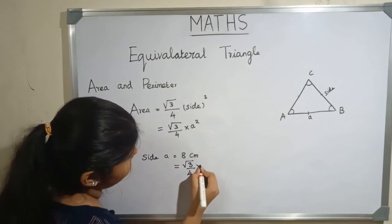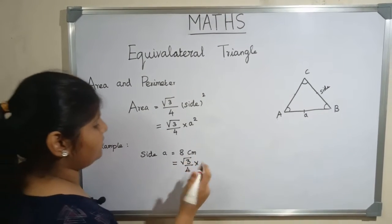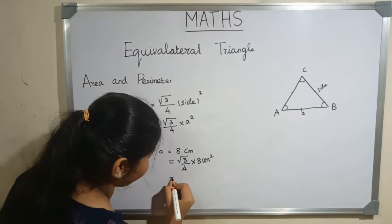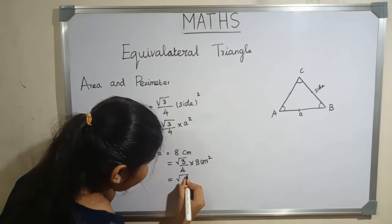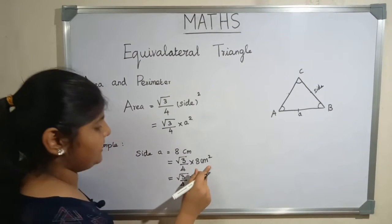Root 3 by 4 multiply 8 centimeter square is also written as 8 centimeters multiply 8 centimeters.